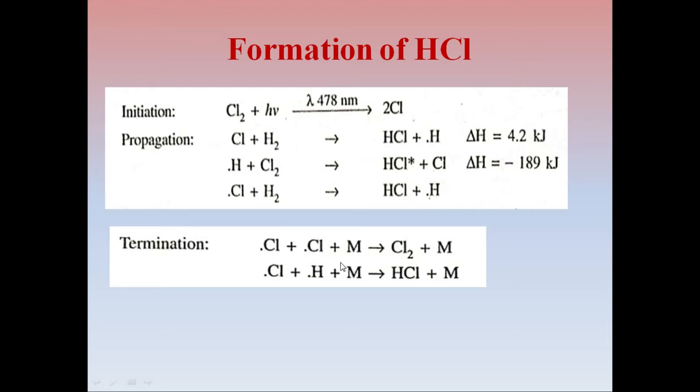Normally to stabilize these intermediates, some material plays a very important role. That is called quenching material, like a surface of the beaker or some foreign particle. These chlorine free radicals combine over M as Cl2 plus M. Similarly, Cl dot plus H dot plus M gives HCl plus M.